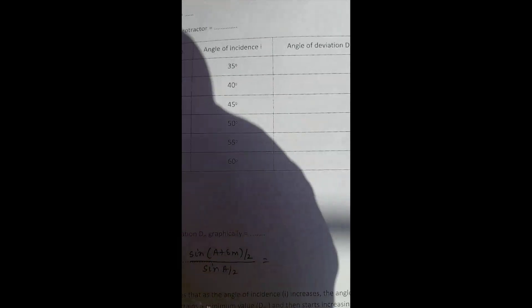Record all these in the observation table. Corresponding to each angle of incidence, write down the angle of deviation. So we are going from 35 to 60.